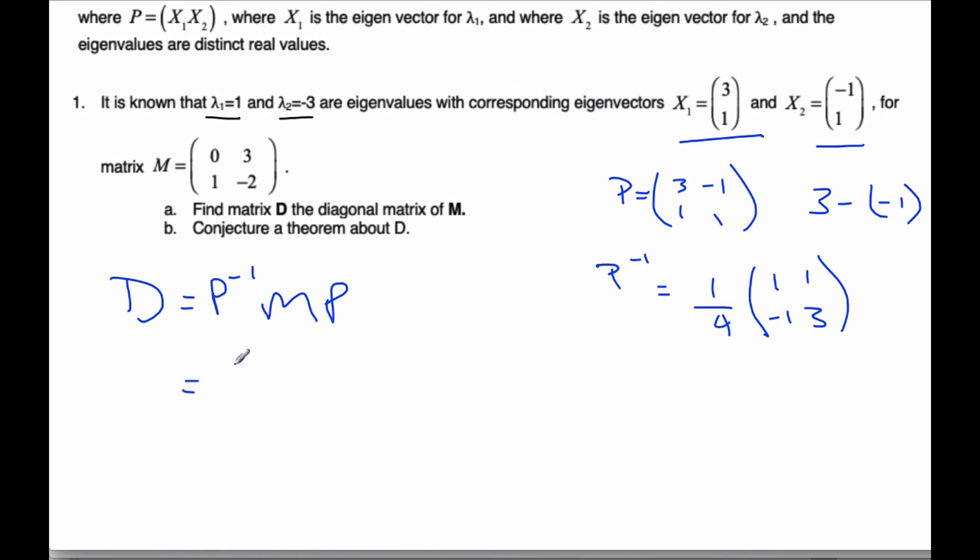So we set this up, and I can say 1 quarter times 1, negative 1, 1, 3, times 0, 3, 1, negative 2, and times 3, negative 1, 1, and 1.